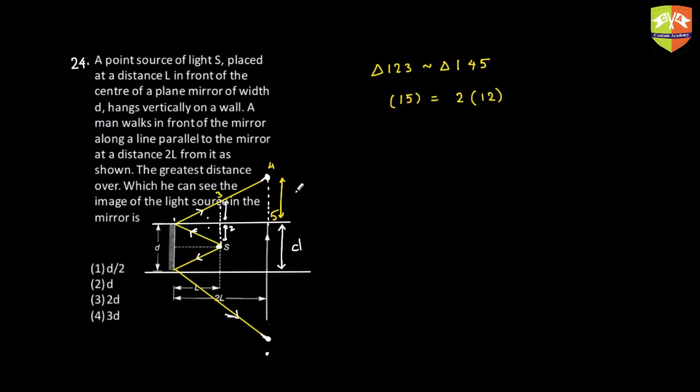So if two to three is D by two, this has to be D. And similarly, this distance will also come out to be D. Fine. So the total distance will be D plus D plus D, which will be three D. That's why option number four is correct over here.